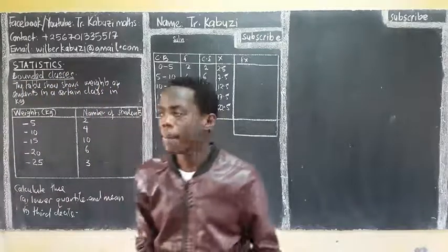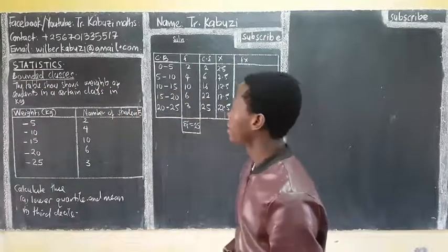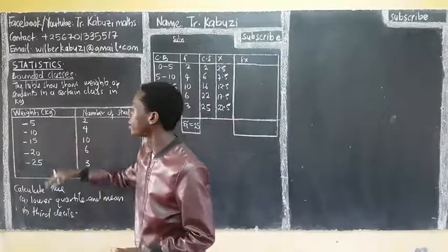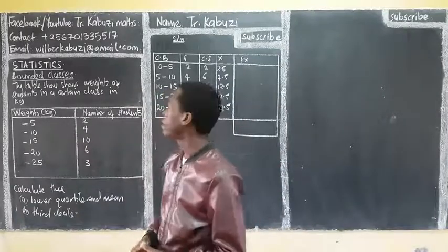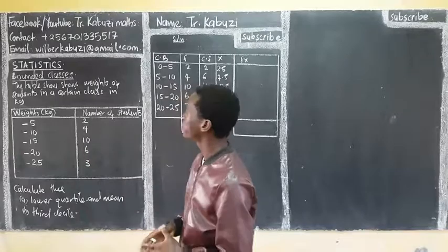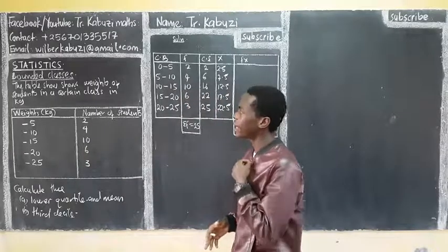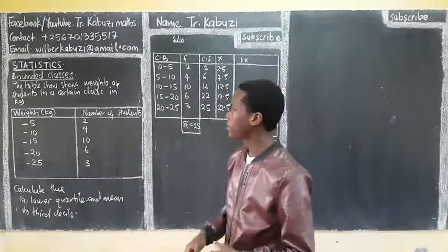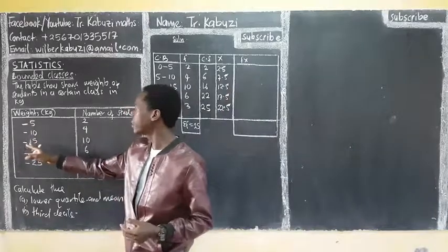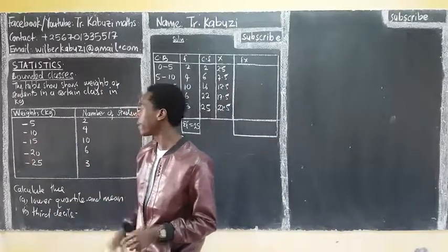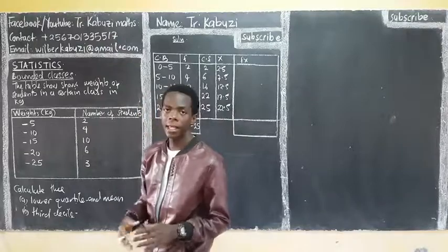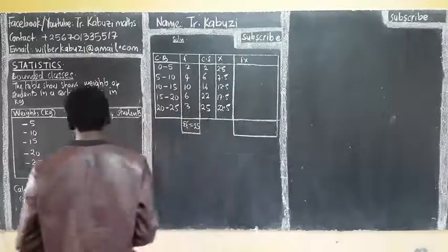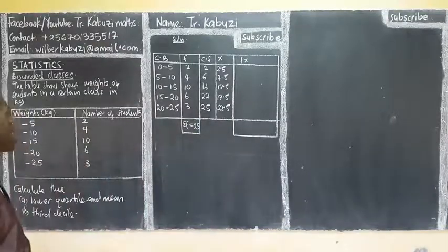Now members, we are going to start an example of bounding classes. So when we have this, this shows that these classes are also bounding. So we have the table here shows the weights of students in a certain class in kilograms. So you see 2, 5, 10, 15, 20, 25. You see that? That shows that these classes are also bounding. Calculating the lower quartile and the mean.